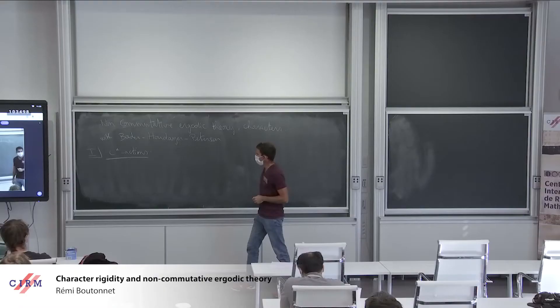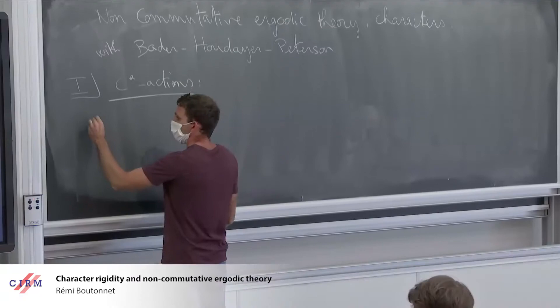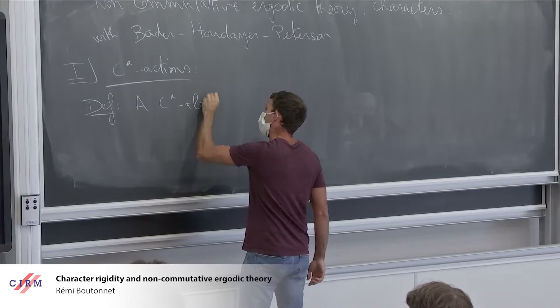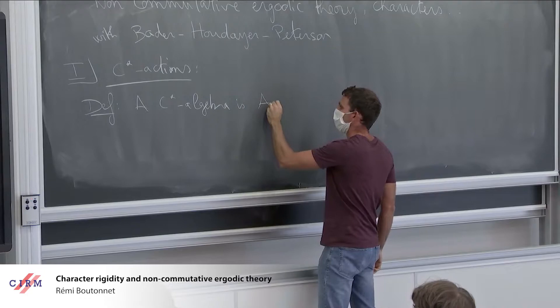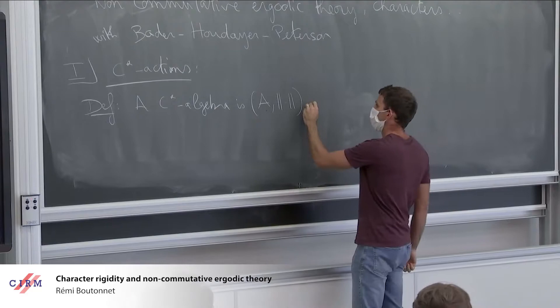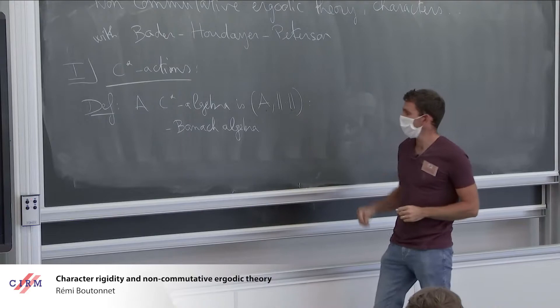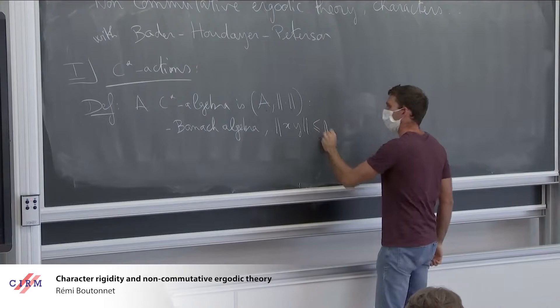It's better if I recall the definition of a C*-algebra, so we start from scratch. A C*-algebra is an algebra A with a norm. I assume that it is a Banach algebra, which means that the norm is complete and the product satisfies not only the triangle inequality but also the submultiplicativity of the norm.